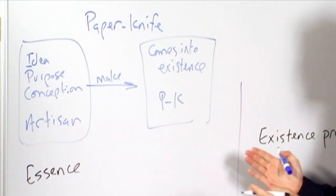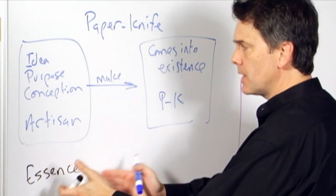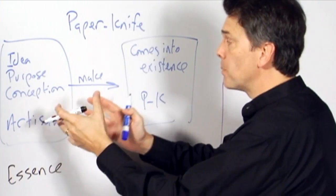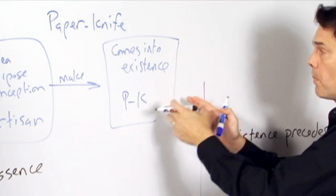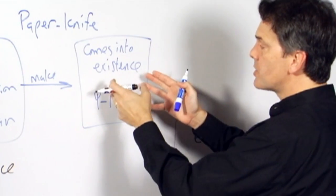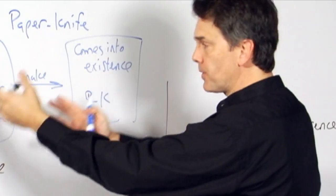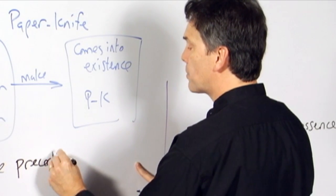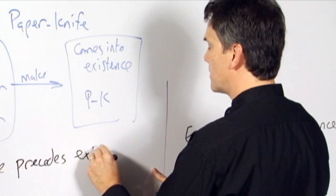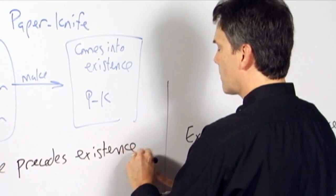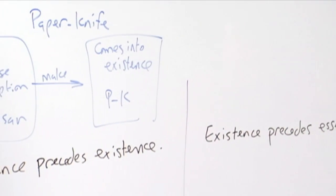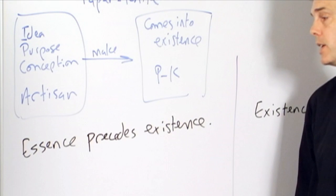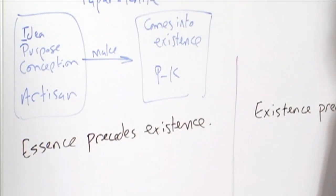And the point is that the essence, that is to say the idea and the conception of the paper knife, is there before there are any actual paper knives. The existence of the paper knife comes after the essence. So in this case, essence precedes existence. And that makes a lot of sense in the example of the paper knife or any sort of article of manufacture here.